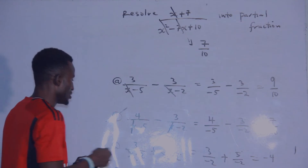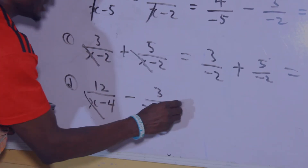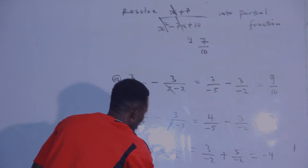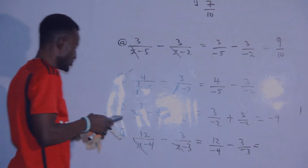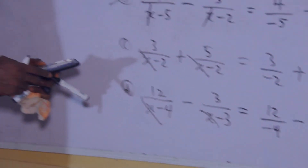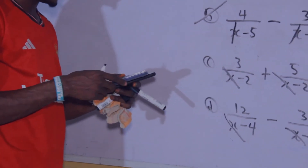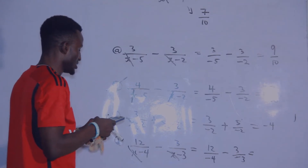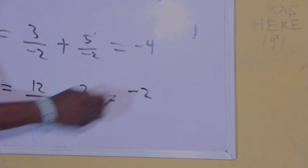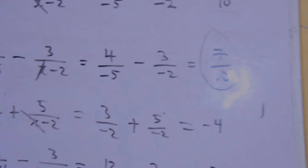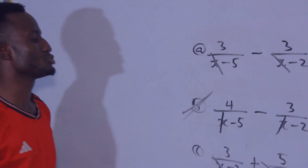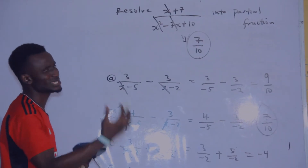For the last option D: cancel this, cancel this — the remaining values are 12 over negative 4, minus 3 over negative 3. Pressing this on the calculator gives negative 2. Comparing with the question, we have 7 over 10 from the question and 7 over 10 from option B — so the correct answer is option B.